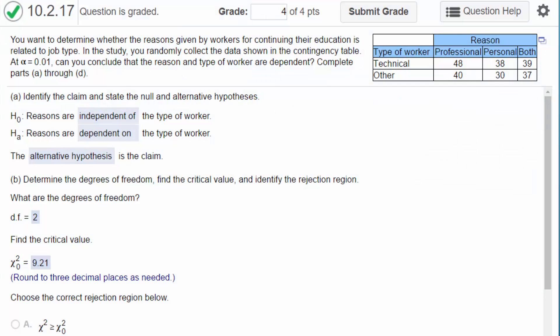Hi, this is Don, and we're going to go over a problem from Chapter 10 about a chi-square test for independence.